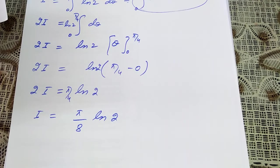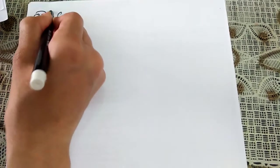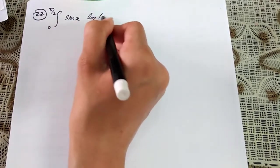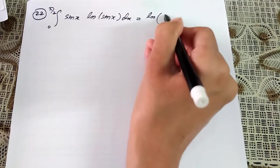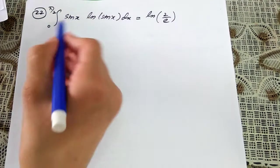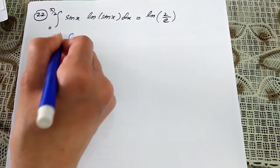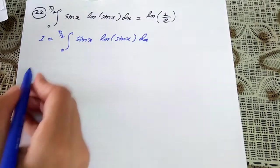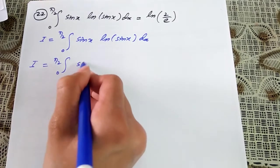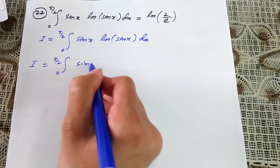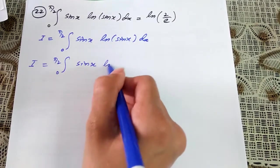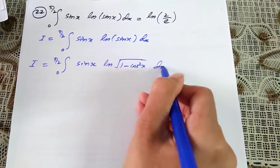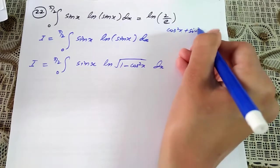Question number 22: prove that the integral from 0 to π/2 of sin x times ln(sin x) dx equals ln(2/e). Let i equal the integral from 0 to π/2 of sin x times ln(sin x) dx. I can write ln(sin x) as ln(√(1 minus cos²x)), using the identity sin²x plus cos²x equals 1.